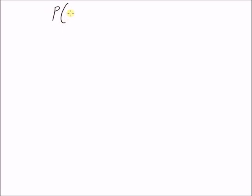Hello, welcome. In this short video, let us look at the CRB, that is the Cramér-Rao bound, on a function of the parameter. Consider the probabilistic model P(x_n; theta), that is observation x_n with the parameter theta. This is the probabilistic model of the observation x_n.